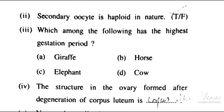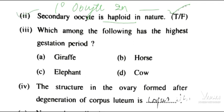Next is a very easy question. Secondary oocyte is haploid in nature — yes, it is haploid in nature. If you talk about the primary oocyte, then that is diploid in nature.